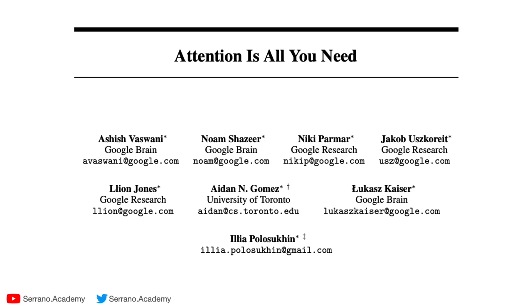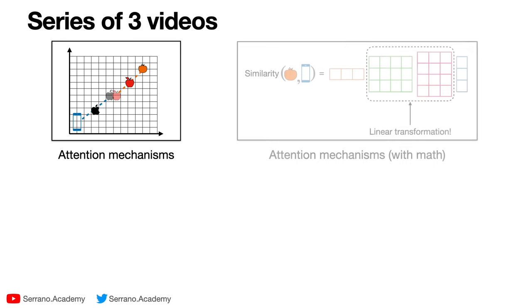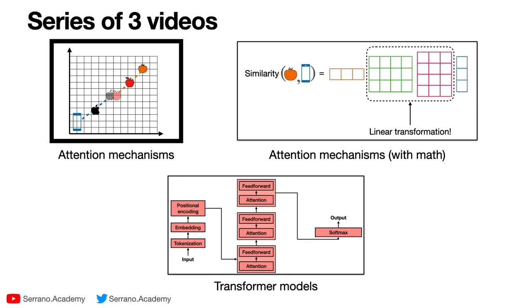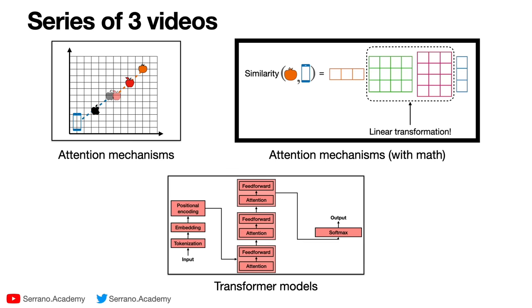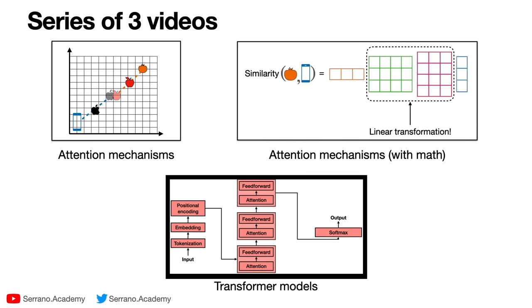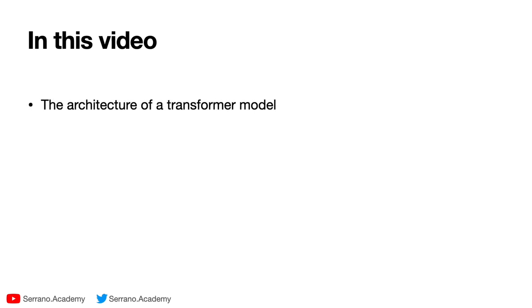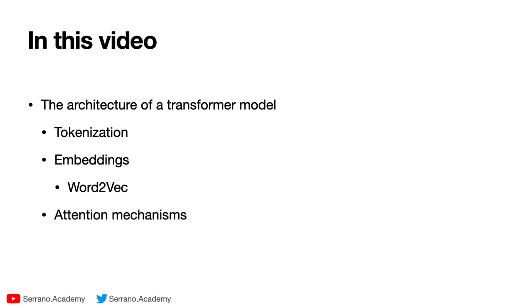Transformers were introduced in the paper called 'Attention Is All You Need.' This is the third of a series of three videos. The first was about attention mechanisms — mostly the idea behind them. The second also covered attention mechanisms but with more math. This third one covers the whole architecture of a transformer model, including tokenization, embeddings — in particular Word2Vec — attention mechanisms, and feed forward neural networks, which are the main engine of a transformer model.